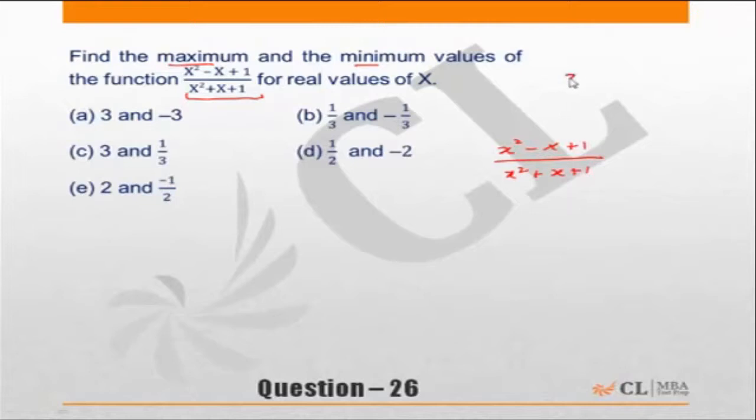Now for all real values of x, x square will be greater than x. That means the numerator will always be positive. So numerator will always be positive because x square minus x will be a positive number plus 1 will be a positive number. Similarly x square plus x plus 1 will also be positive.